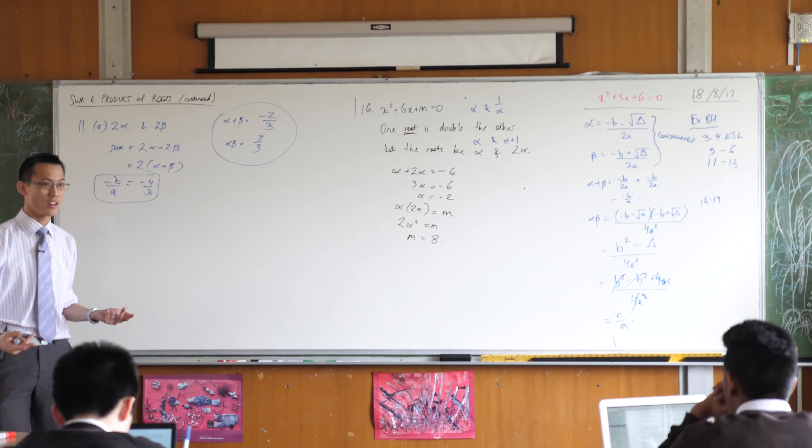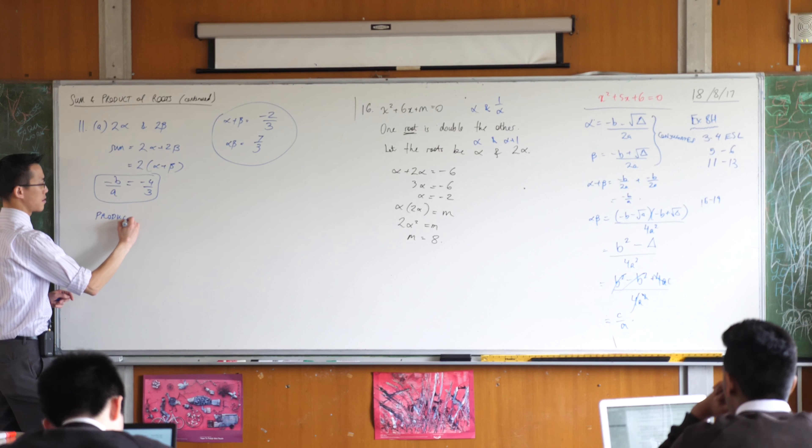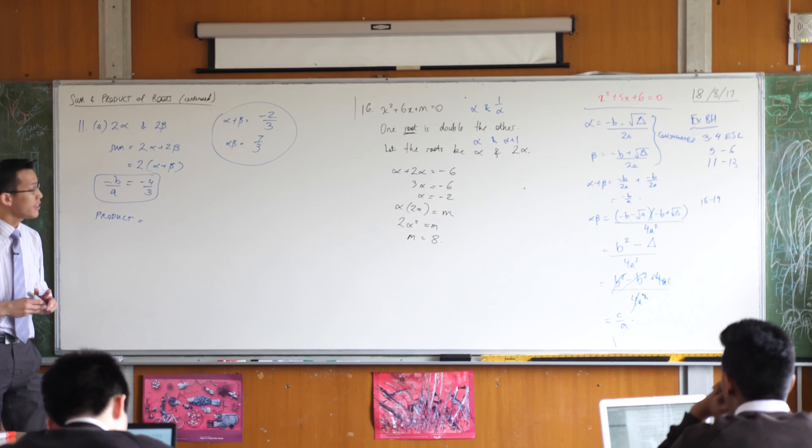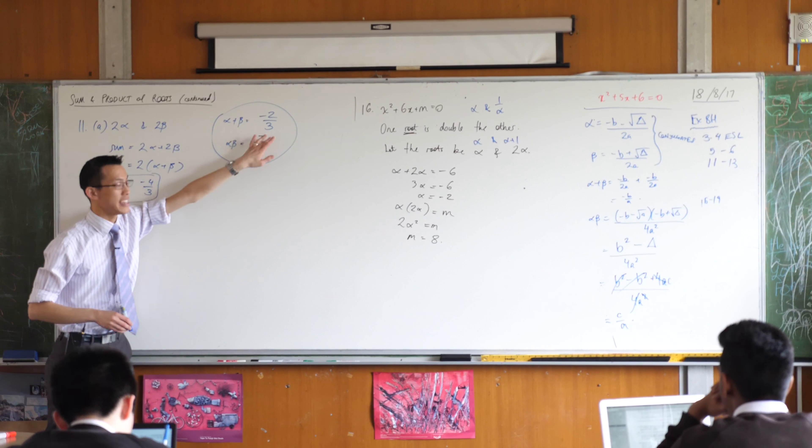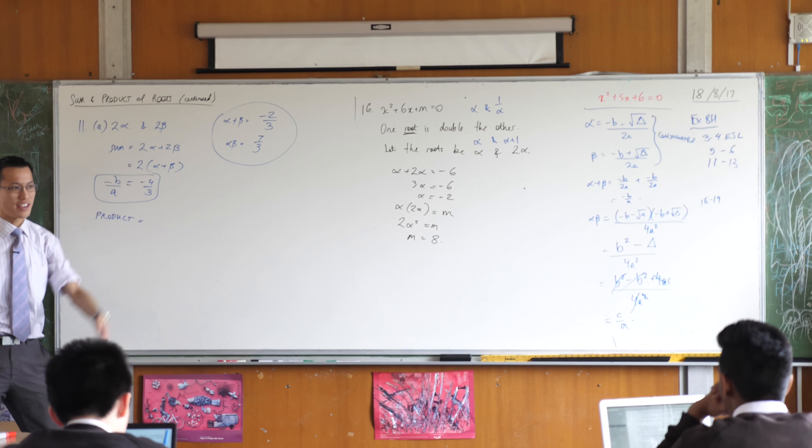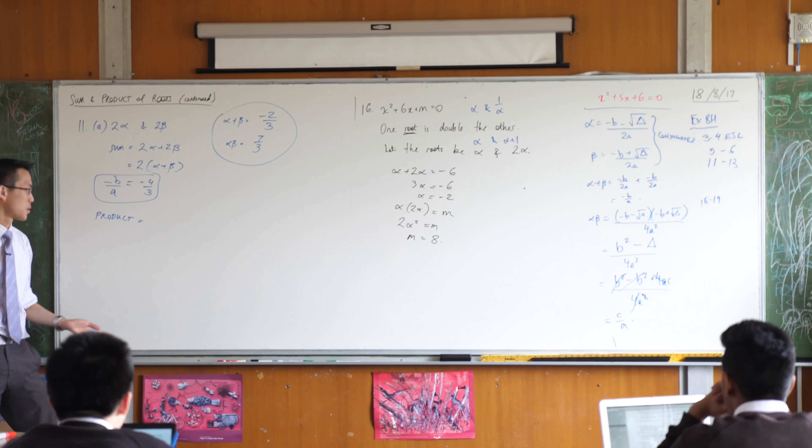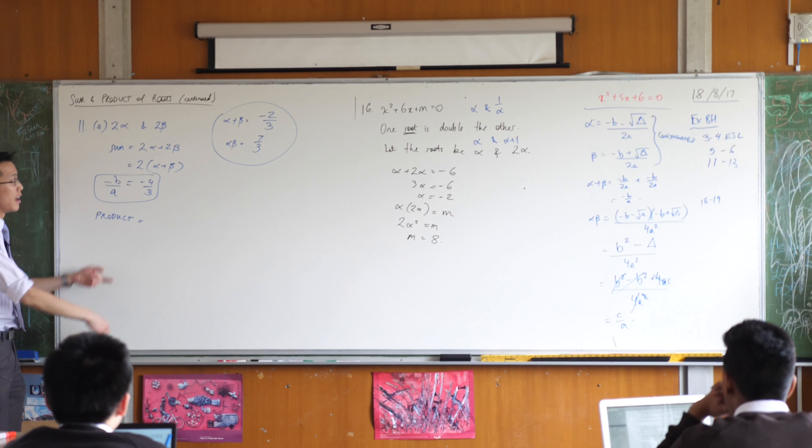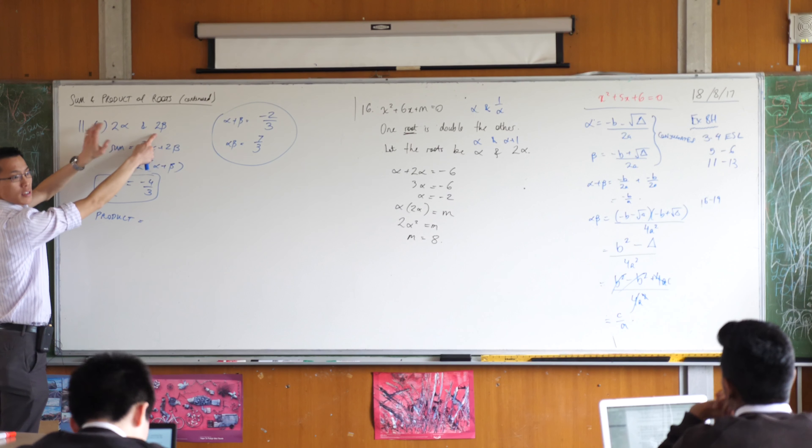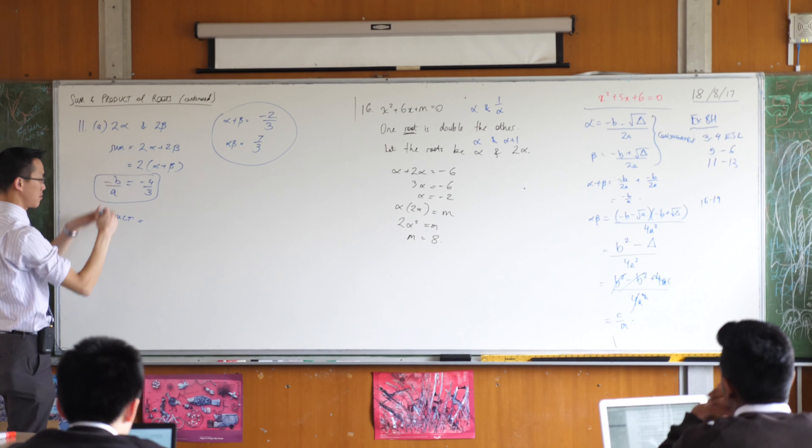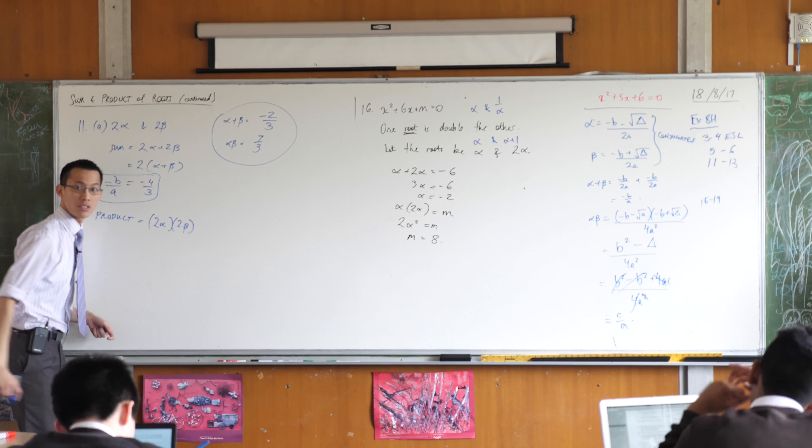The natural next step is to do the product. Now ordinarily, like I did at the start of the question, I work out the product of roots by saying c over a. But are you sick of me saying this yet? I can't do that because I don't know what c and a are equal to. So therefore, I've got to appeal to something else. Namely, if this is what the roots are, then the product of the roots is this times this.